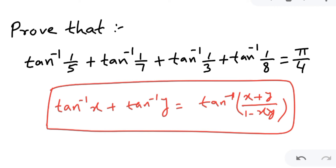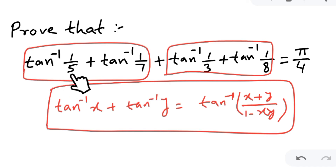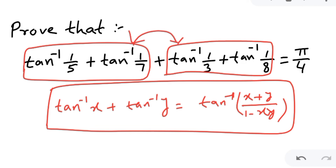Since there are four terms, I will use two terms at a time. First I will apply the formula on the first two terms, then on the next two terms to get a tan inverse expression each, and then apply the same formula again on those results. This will be our approach, solving step by step.